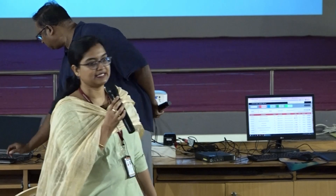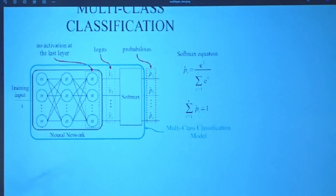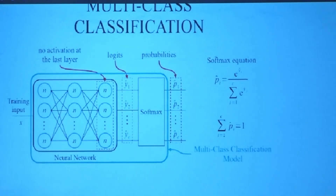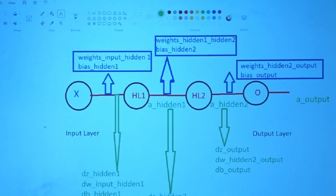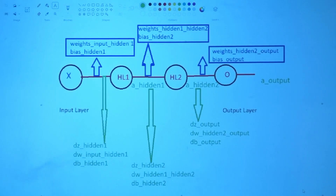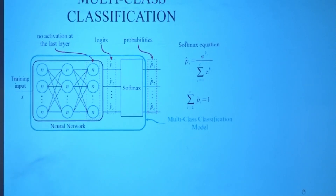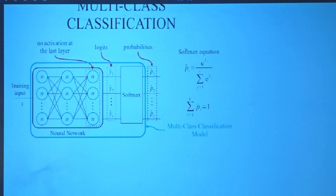After computing all z and a outputs in forward propagation, the logics (a_out) are passed to the softmax activation function. The output of softmax would be probabilities — for example 0.28, 0.78, 0.1 for three classes. We say the class with the highest probability is the prediction. The sum of all probabilities across all classes equals 1.